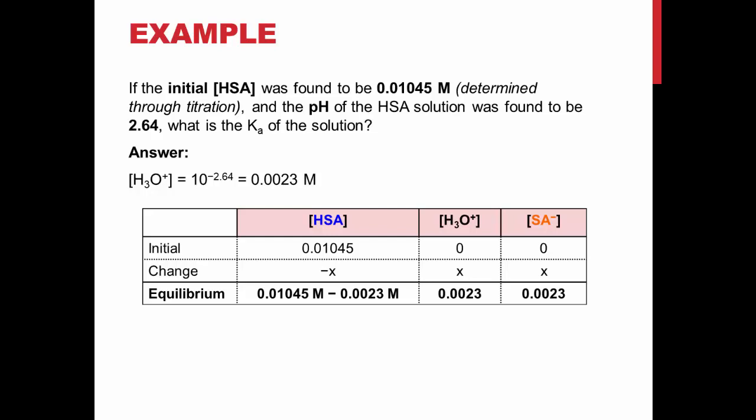The equilibrium concentration of HSA is found by subtracting 0.0023 from 0.01045. Expression as shown on the slide. And the Ka can be calculated as shown. Due to the fact that a weak acid is being used, Ka is expected to be low.